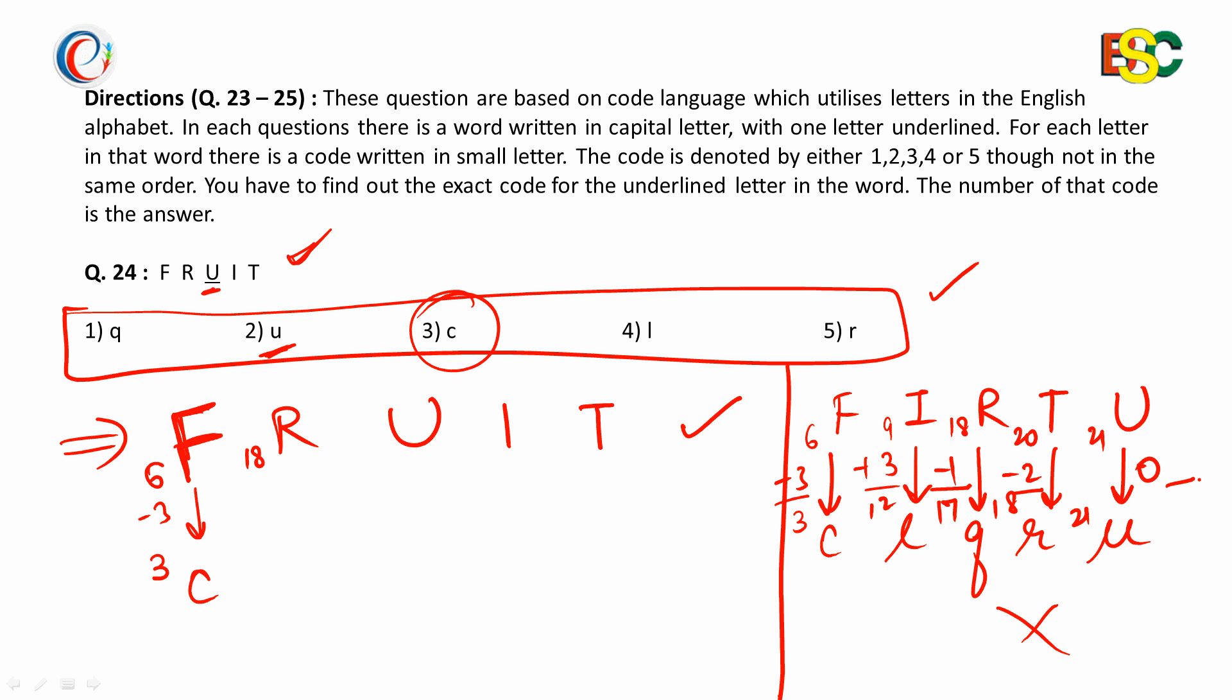What if we subtract 3 from 18? It becomes 15 and 15th letter is O. And none of the option is O. So we will add 3 to this and the letter we obtained is U, which is one of the code.